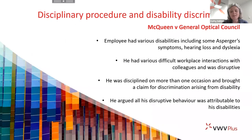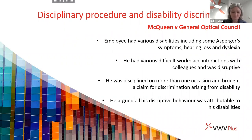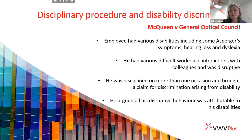The next case is McQueen against the General Optical Council. This is a case looking at where somebody with a disability was subject to disciplinary proceedings because of poor behaviour. Mr. McQueen had various disabilities including symptoms of Asperger's syndrome, left-sided hearing loss, and dyslexia. His employer, the General Optical Council, knew about these disabilities, accepted them, and sought over a number of years to support him at work.